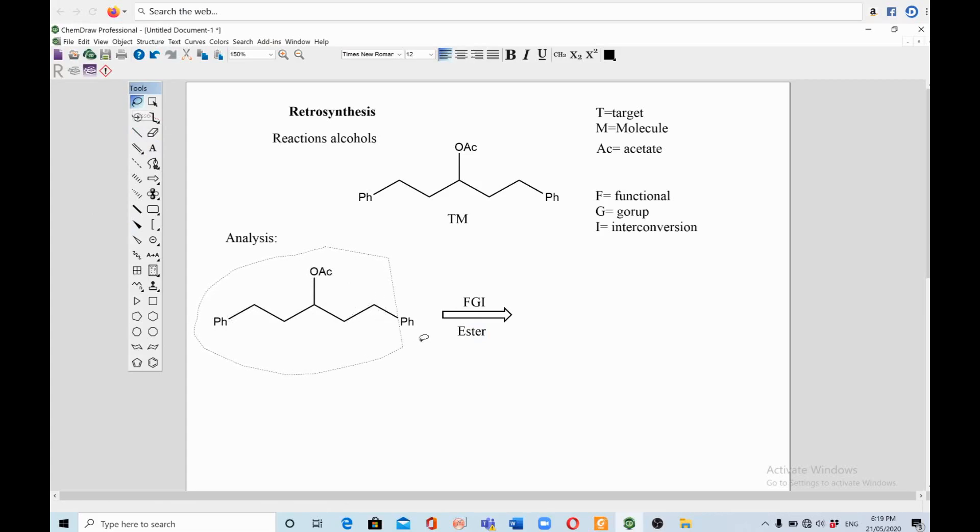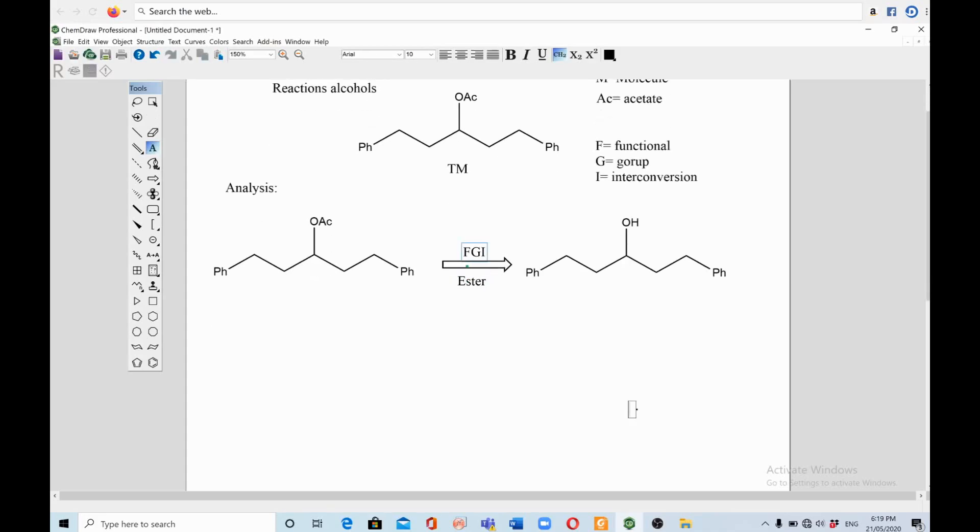So in step two, we convert OAc into OH. Now if you see, we have a symmetrical alcohol because both sides, left and right, are exactly the same, and this is a secondary alcohol as well.